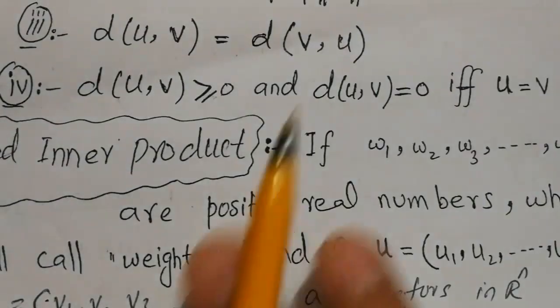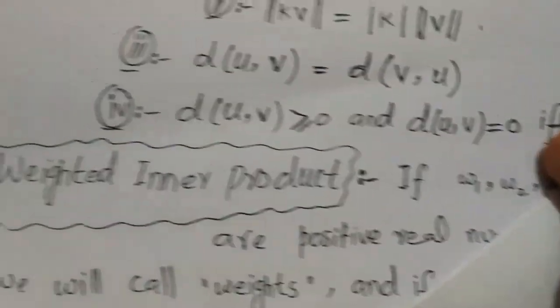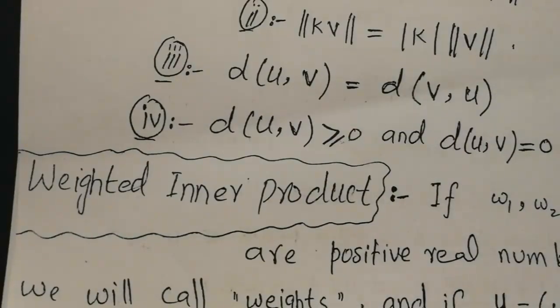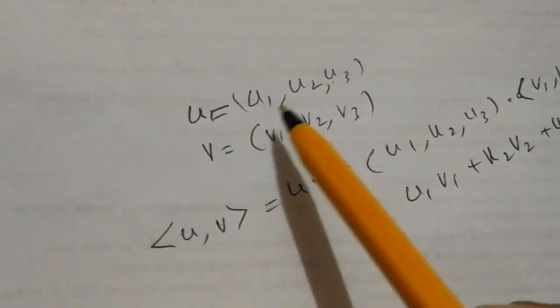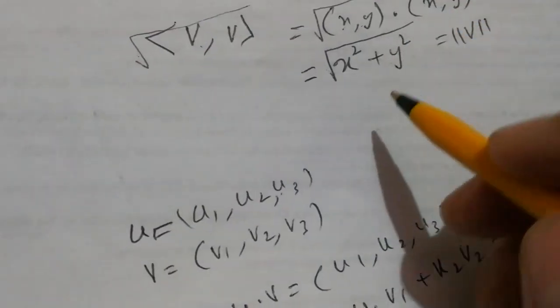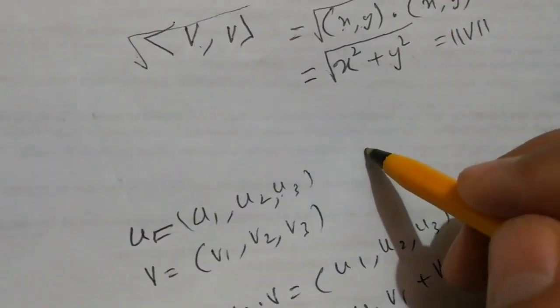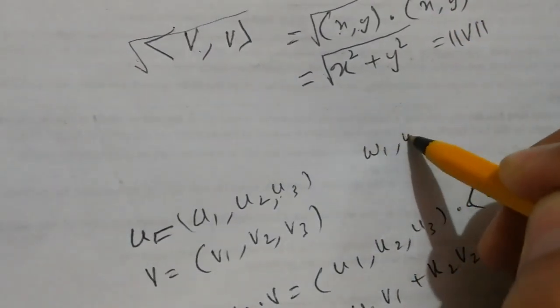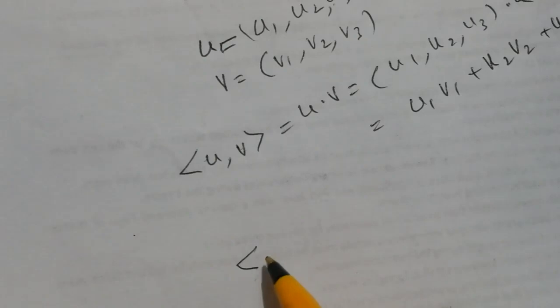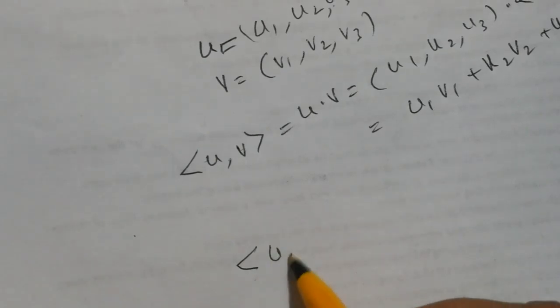For the weighted inner product, if we have vectors u = (u1, u2, u3) and v = (v1, v2, v3), we introduce weights w1, w2, w3.